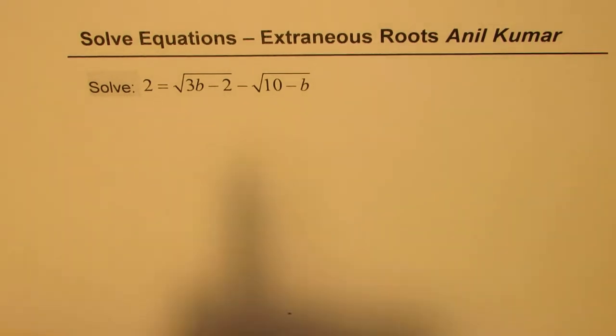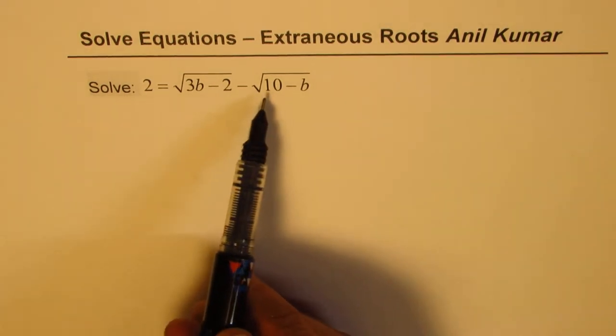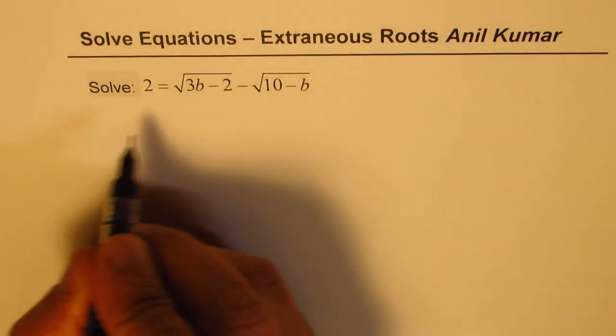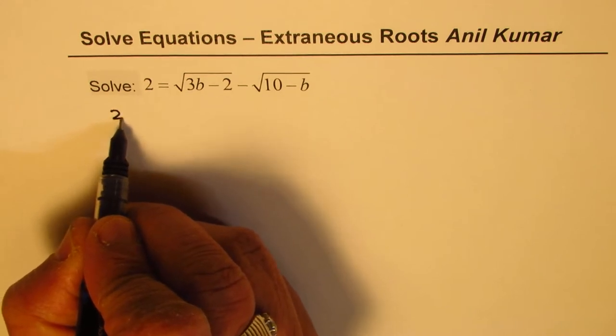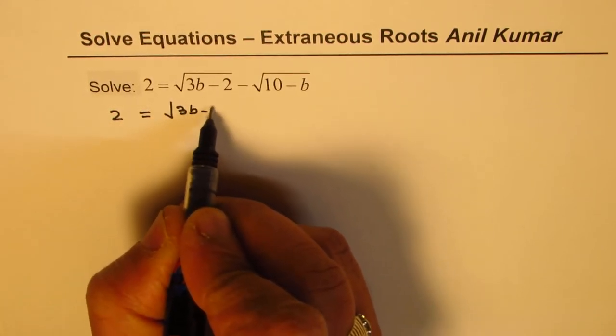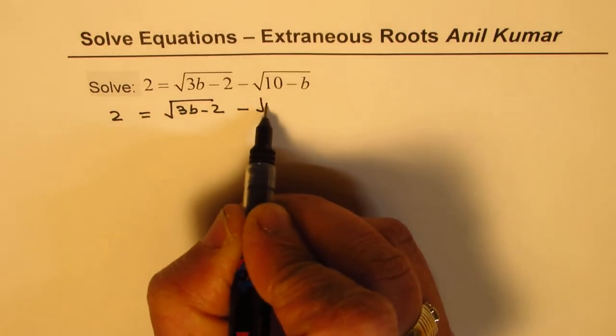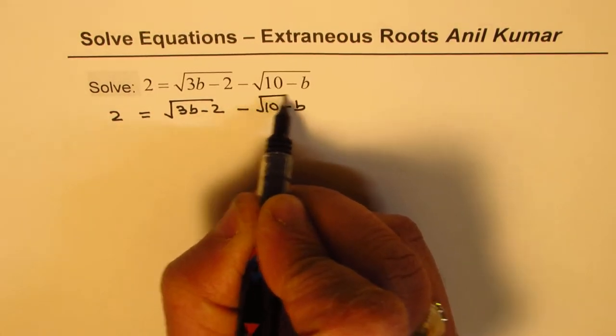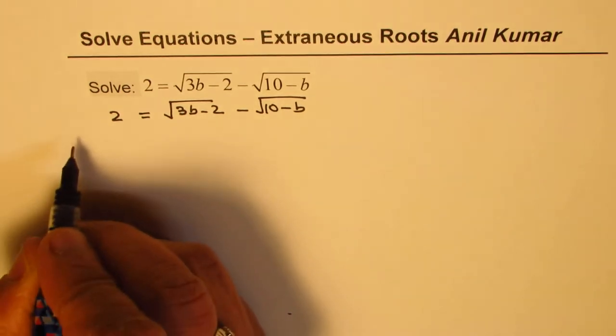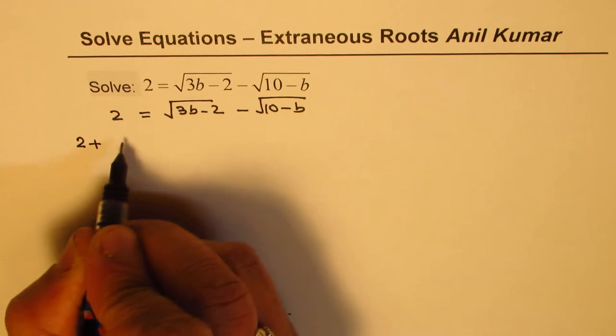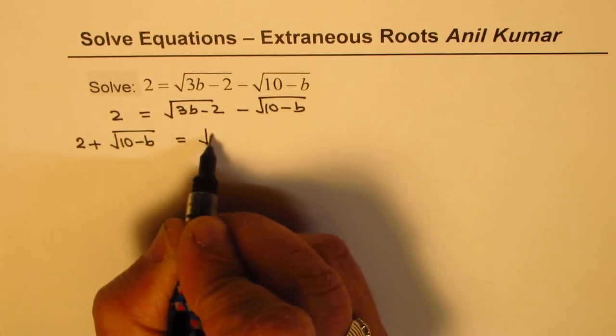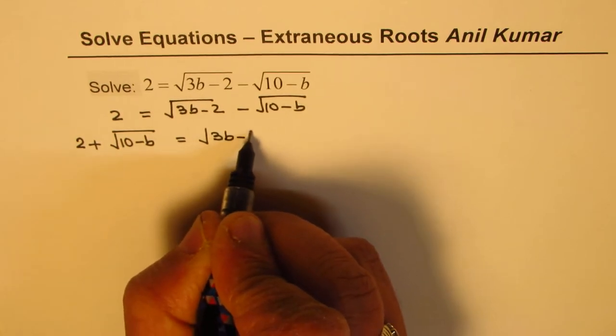To solve such equations, it's a good idea to bring or take only one square root on one side. So we'll rewrite this equation. The equation given to us is square root of 3b minus 2 minus square root of 10 minus b. I'll rewrite bringing the second term to the left side, so it becomes 2 plus square root of 10 minus b equals square root of 3b minus 2.